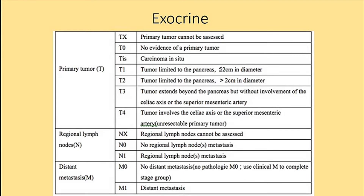Staging follows the TNM system. For the primary tumor: T1 is less than 2 centimeters in diameter, limited to the pancreas; T2 is limited but 2 to 4 centimeters; T3 extends beyond the pancreas but does not involve the celiac axis or the superior mesenteric artery; T4 does involve those structures. For regional lymph nodes, N0 means no lymph node involvement and N1 means involvement is present.